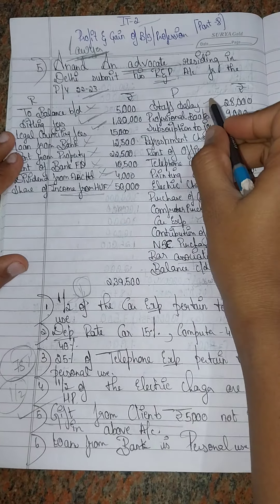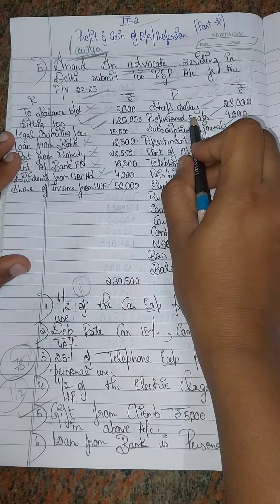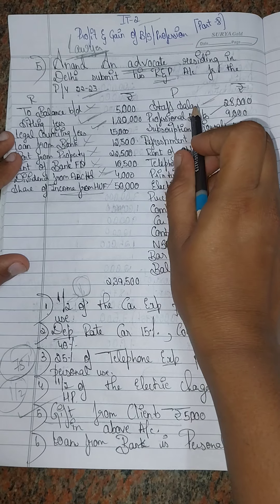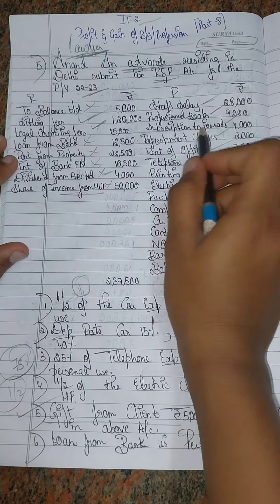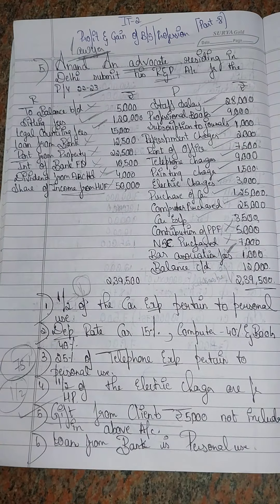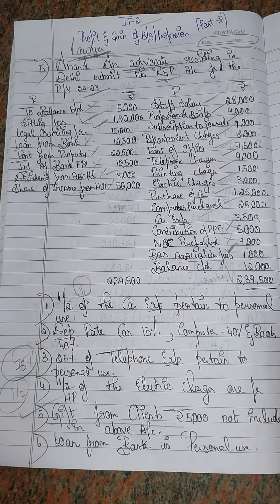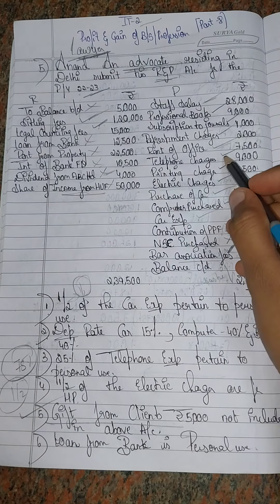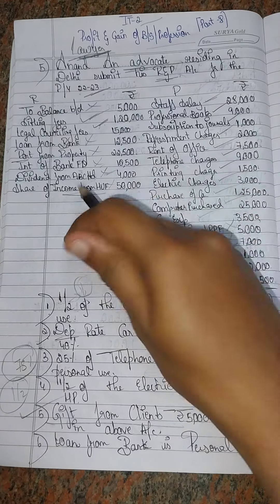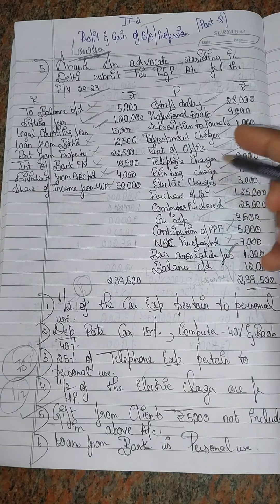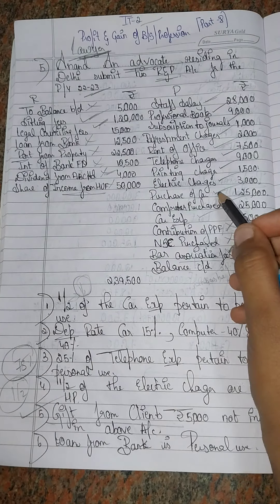On the payment side we have: staff salary, which is professional-related; professional books on a percentage basis; subscription to journal, which is professional-related; refreshment charges; rent of office, which is profession-related; telephone charges; printing charges; electricity charges for the advocate's office. Next is purchase of car for profession use, and that is on a percentage basis.